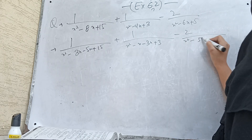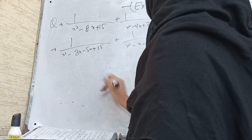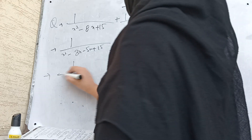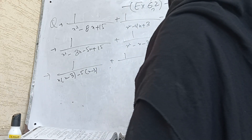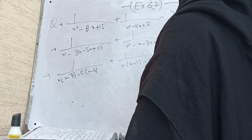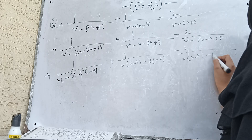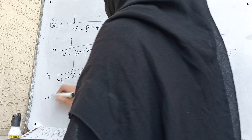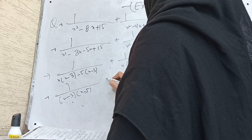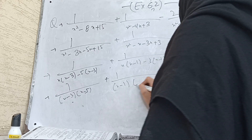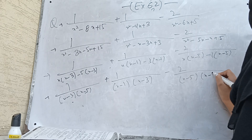The next question involves simplifying the expression. We have 1 over [x(x-3) minus 5(x-2) + 1], divided by [x(x-1) minus 3(x-1)] minus [2x(x-5) minus 1(x-5)]. The factors are (x-3), (x-5), (x-1), (x-3), (x-5), and (x-1).